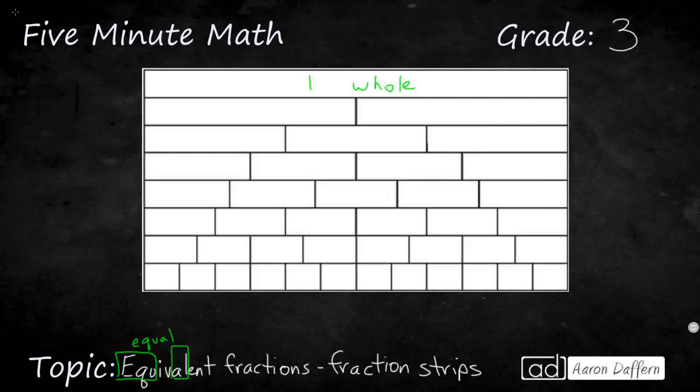So look at the second row right here. The second row is broken up into halves, and I know it's broken up into halves because there are two pieces. And so I'm going to label each of these as its unit fraction. So that's one half, and that's one half.